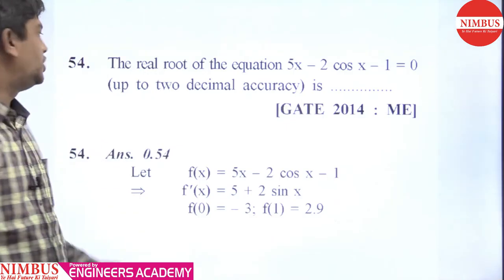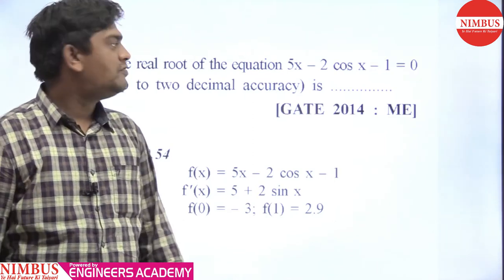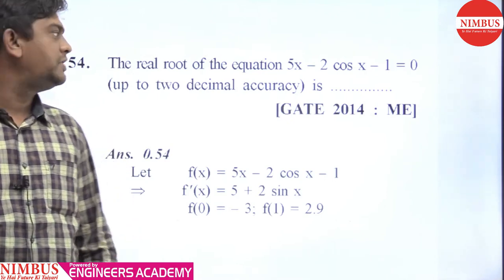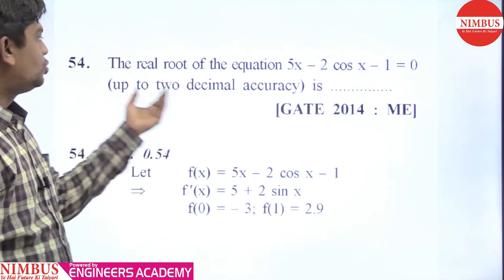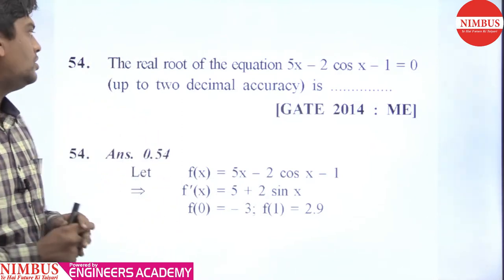Hello students, we are discussing question number 54. The question is: the real root of the equation 5x minus 2cos(x) minus 1 equal to 0, up to 2 decimal accuracy. So this is the real root of the equation.